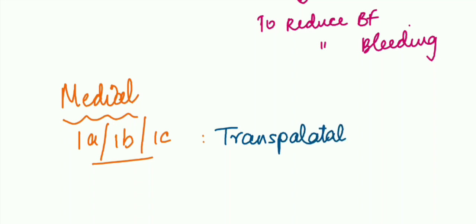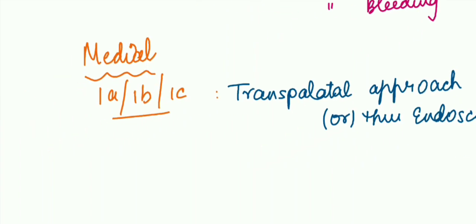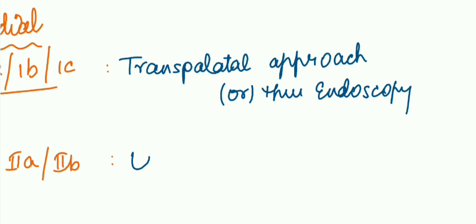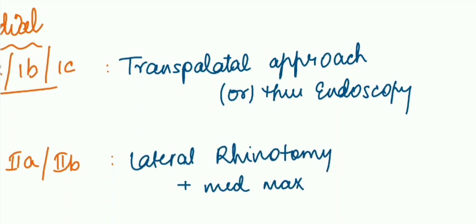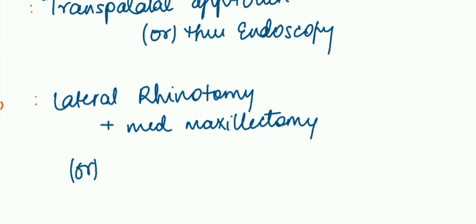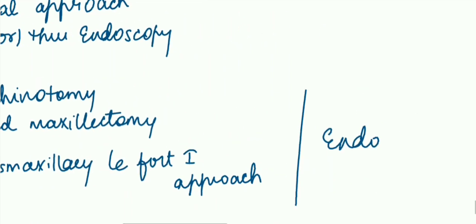In case there is medial spread or medial extension, that is 1a, 1b, 1c, we go for transpalatal approach or endoscopy. And if it is lateral, that is 2a or 2b, that is in the sphenopalatine fossa, we go for lateral rhinotomy and medial maxillectomy. And there is one more approach to this area, which is called the transmaxillary Le Fort 1 approach, or we go through endoscopy.